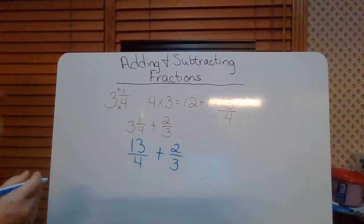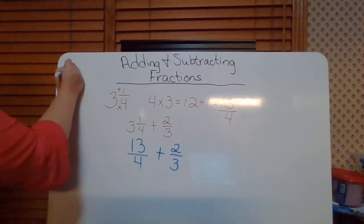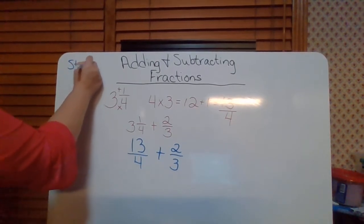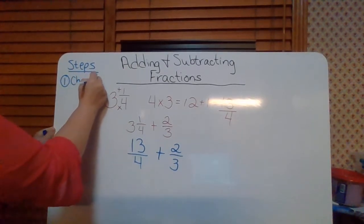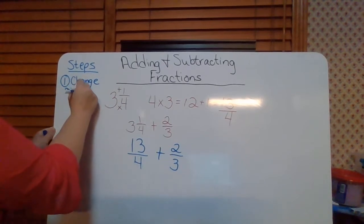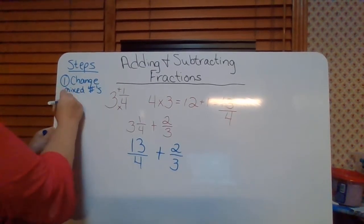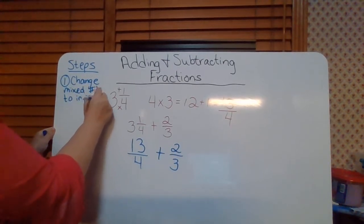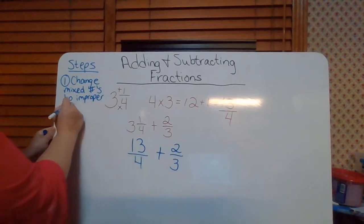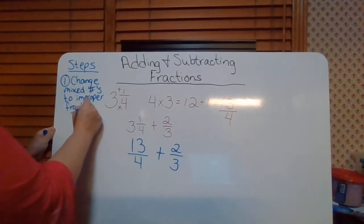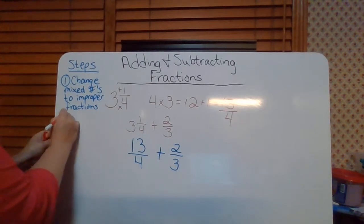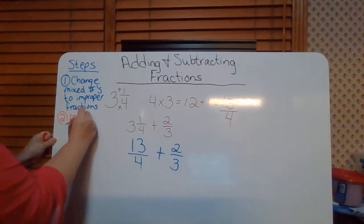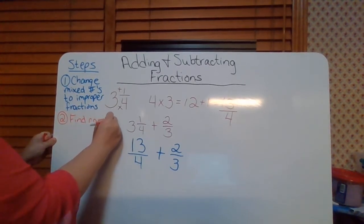Now, with adding and subtracting fractions, there are a couple of steps you need to follow. Step one: we are going to change mixed numbers to improper fractions. That should not be a surprise — that's always our first step when we're dealing with fractions. Our second step is we are going to find the common denominator.